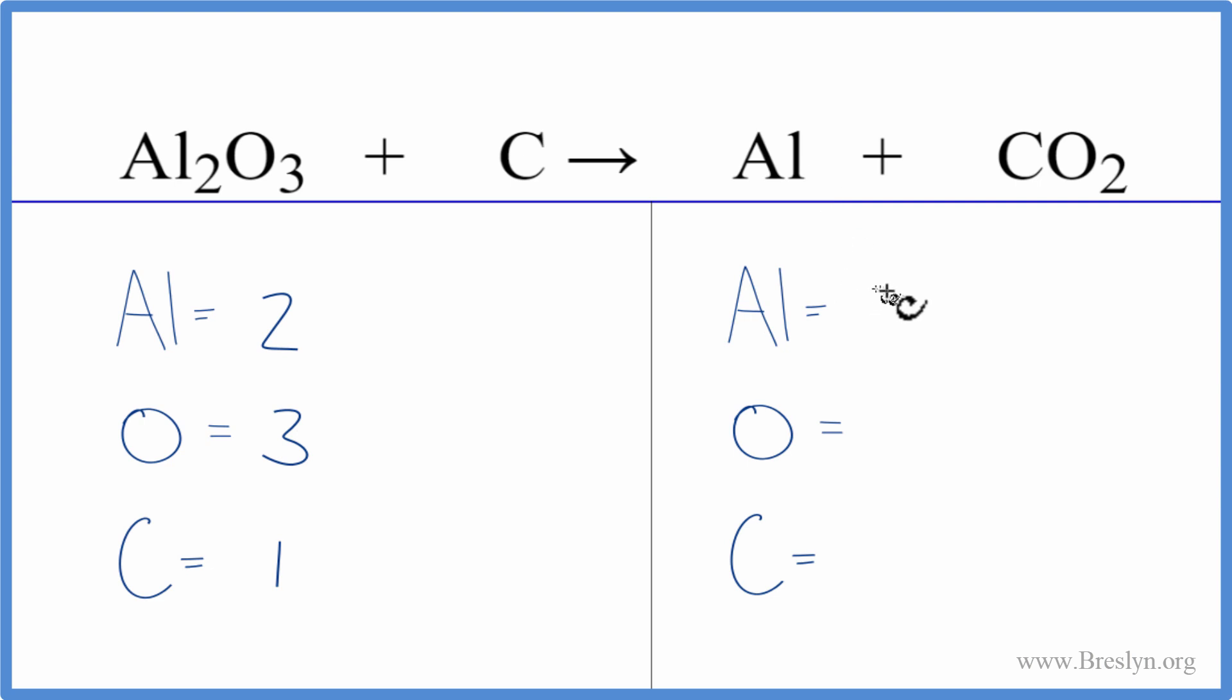On the product side, we have one aluminum, two oxygens, and again, just one carbon. So it's not balanced. It looks like we could balance the aluminums pretty easy, but since aluminum's all by itself, let's leave that till last because that's really easy to balance.